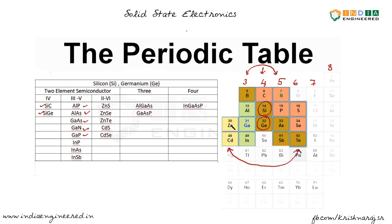We also have compounds formed by group two and group six elements, such as zinc sulfide, cadmium sulfide, and zinc selenide. Additionally, we have three-element semiconductors like aluminium gallium arsenide and gallium arsenide phosphide, as well as four-element semiconductors.